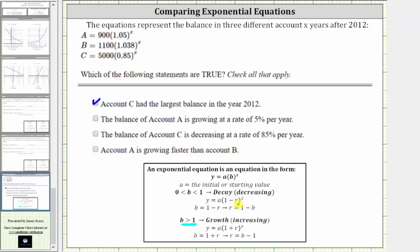And therefore the base B is equal to one plus R, where R is a percent growth expressed as a decimal. And because the base is 1.05, we should be able to recognize that R is equal to 0.05, which is equal to 5%. So account A is growing at a rate of 5% per year is true.